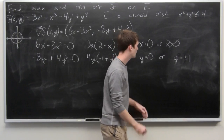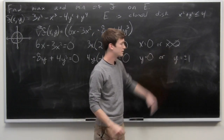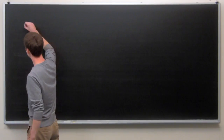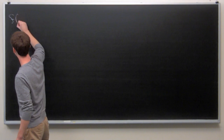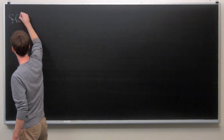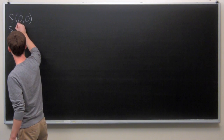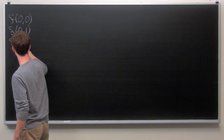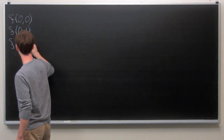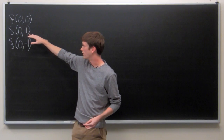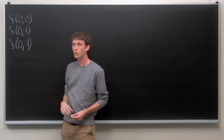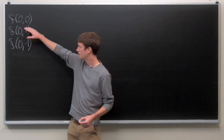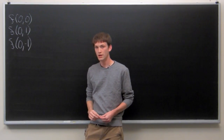We have three interior critical points, since we're not including x = 2. Starting our list: the interior critical points are (0, 0), (0, 1), and (0, −1).